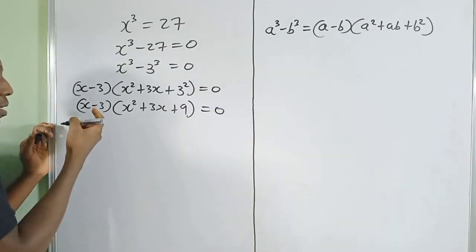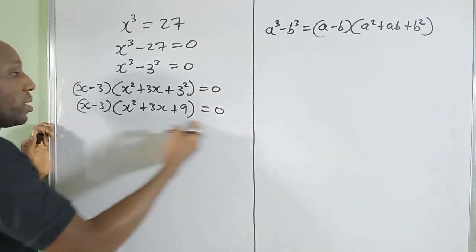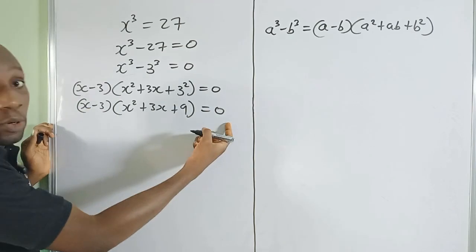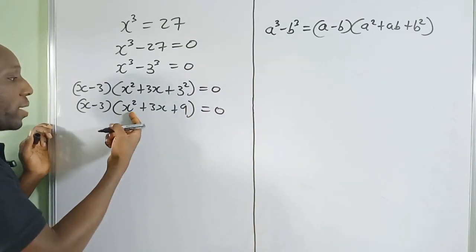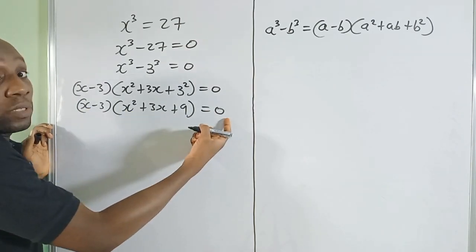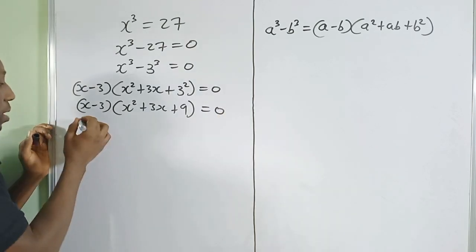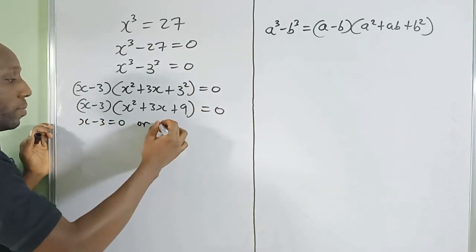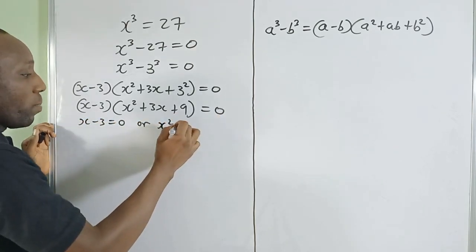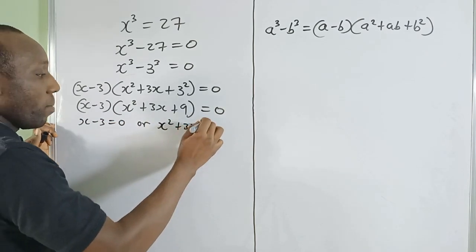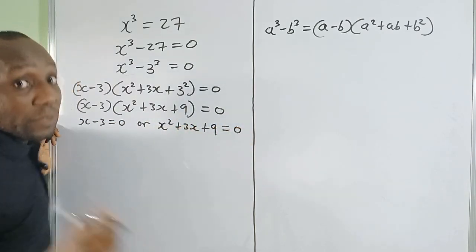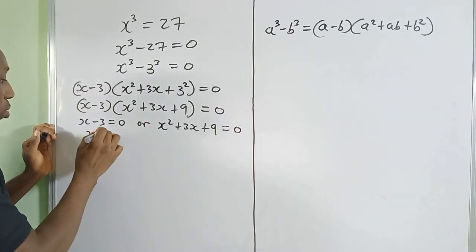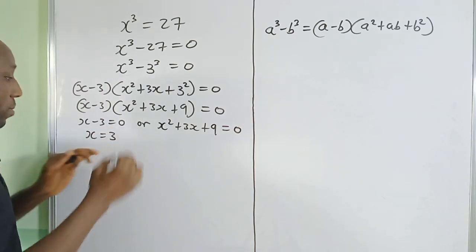From this equation, it means that either (x − 3) = 0 or (x² + 3x + 9) = 0. So x = 3 is one of the solutions.